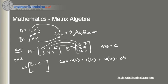How about C_12? We work across row one again, but now we work down column two because we're looking for the element in column two. So we go 0 times 7 plus 1 times 9 plus 2 times 11, which is equal to 31.